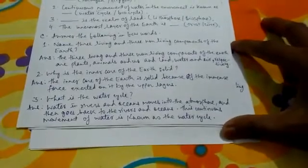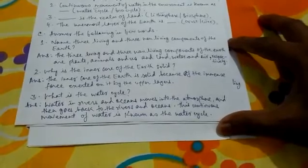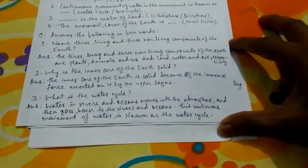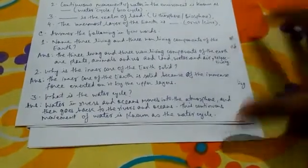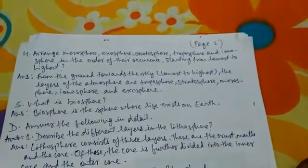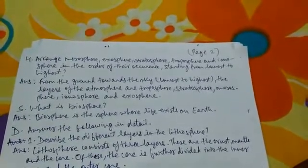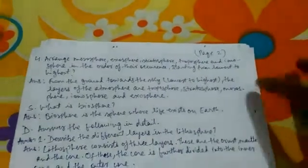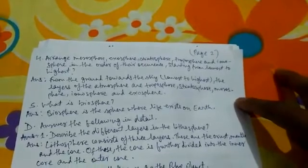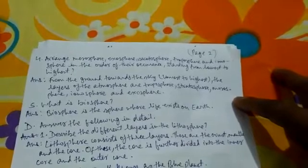Question 3: What is the Water Cycle? Water in rivers and oceans moves into the atmosphere and then goes back to the rivers and oceans. This continuous movement of water is known as the Water Cycle. Question 4: Arrange Mesosphere, Exosphere, Stratosphere, Troposphere and Ionosphere in order from lowest to highest. The answer is: from the ground towards the sky, the layers of the atmosphere are Troposphere, Stratosphere, Mesosphere, Ionosphere and Exosphere.